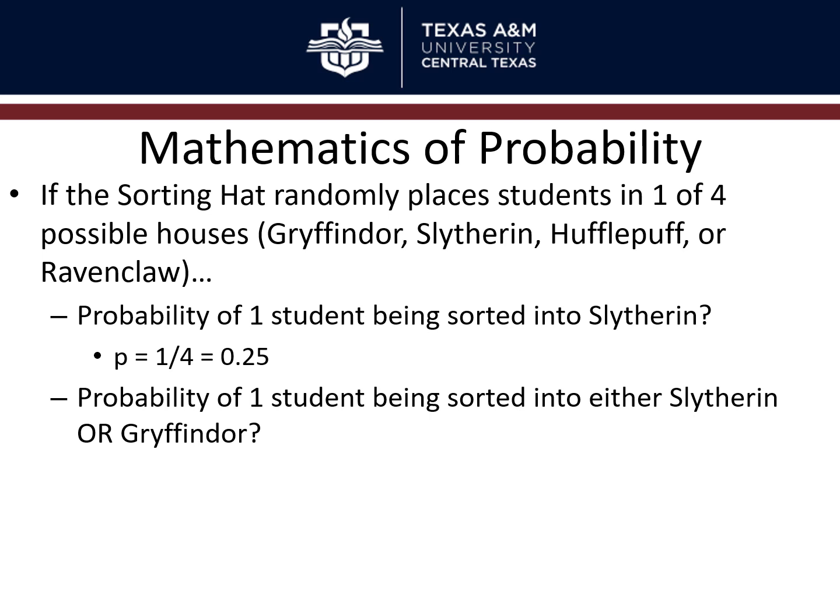What about the probability of one student being sorted into either Slytherin or Gryffindor? When we talk about the probability of two things combined with an 'or,' you just add the two probabilities. That would be one outcome for Slytherin plus one for Gryffindor — one plus one is two — still out of four possible total outcomes, giving you 0.5, or a 50% chance of being in one of those two houses.